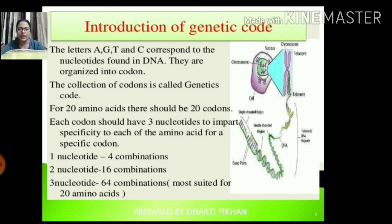If 1 nucleotide gives 4 combinations, 2 nucleotides give 16 combinations, and 3 nucleotides give 64 combinations. So for 20 amino acids, 3 nucleotides with 64 combinations suits the amino acids best.